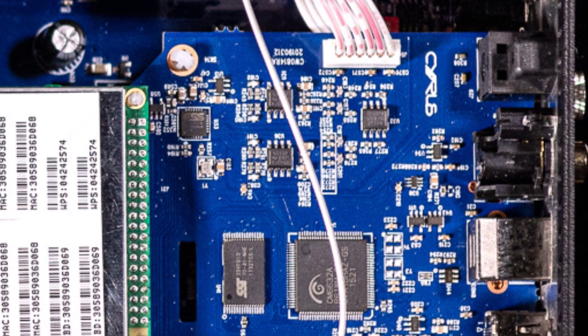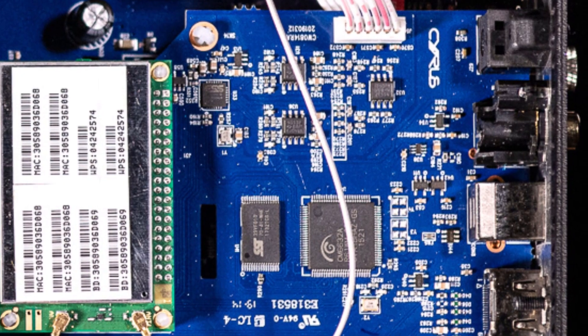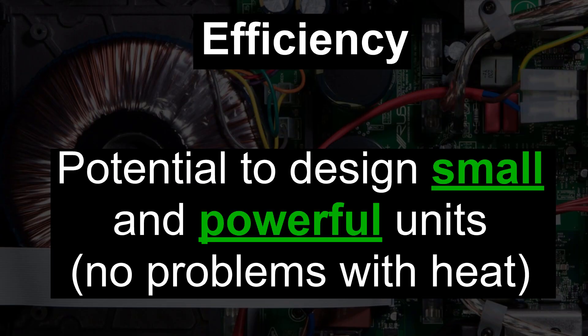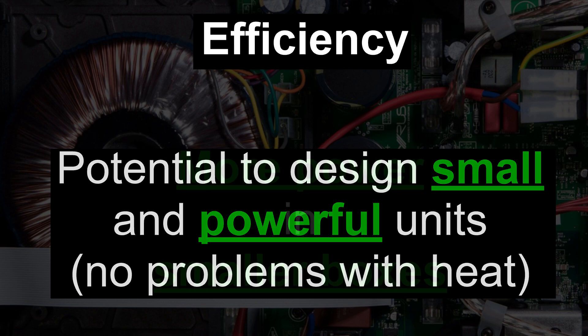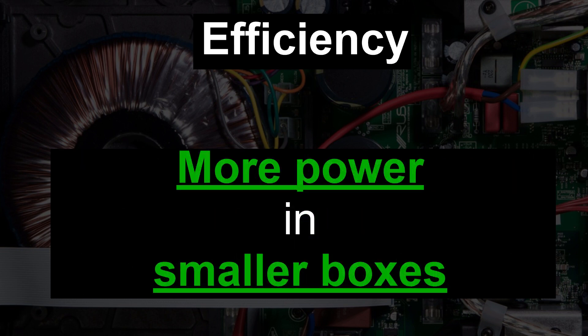Let us first look at advantages. The technology is very efficient, therefore very little power is wasted as heat. This enables manufacturers to design relatively small and powerful units and at the same time get rid of problems with heat that are typical for Class A, for example. So basically, you can squeeze more power into smaller boxes.